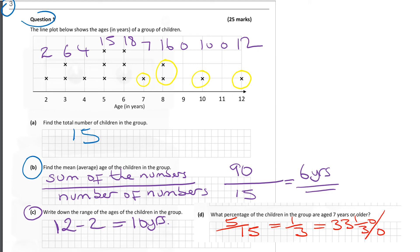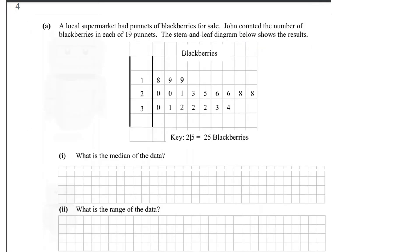So that's question 3. Now, we have a stem and leaf graph here. And a local supermarket had punnets of blackberries for sale. John counted the number of blackberries in each of the 19 punnets. And the stem and leaf diagram shows the results before. And the important thing with stem and leafs is that you understand the key, where that 2, 5 is equal to 25 blackberries. So we can read this data set here as 18 or this one here as 30.